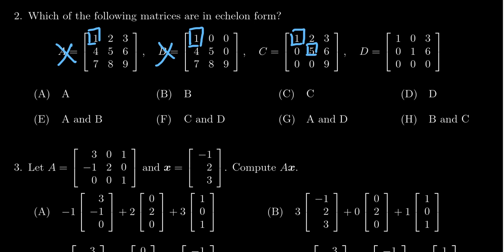Moving to the next column, there would be a pivot in the 3-3 position. Notice how our pivots are forming a downward staircase. There's a pivot there — it's just a nine. There's nothing below the nine, so we don't need to worry about whether it's zeros or not. So this matrix is in echelon form. Notice this matrix does not have any rows of zeros. There is the condition that rows of zeros have to be at the bottom, but this matrix is in echelon form with no rows of zeros.